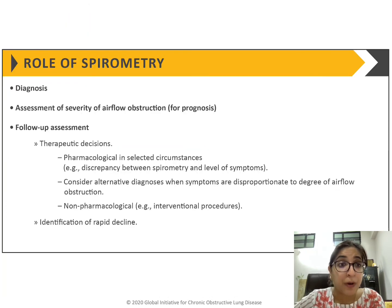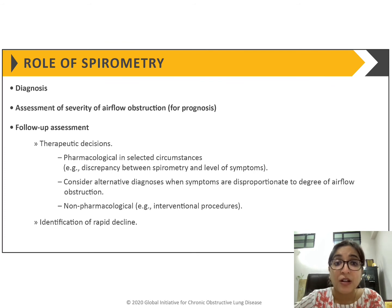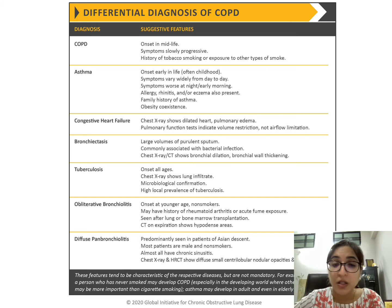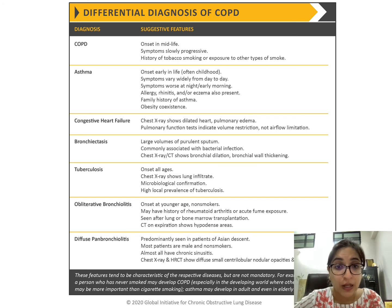Spirometry plays a very important role at diagnosis, assessment of severity, and follow-up after multiple visits. Differentials of COPD are similar to differentials of chronic cough. The strongest differential is asthma, followed by congestive heart failure and bronchiolitis, though anything causing chronic cough should be considered.